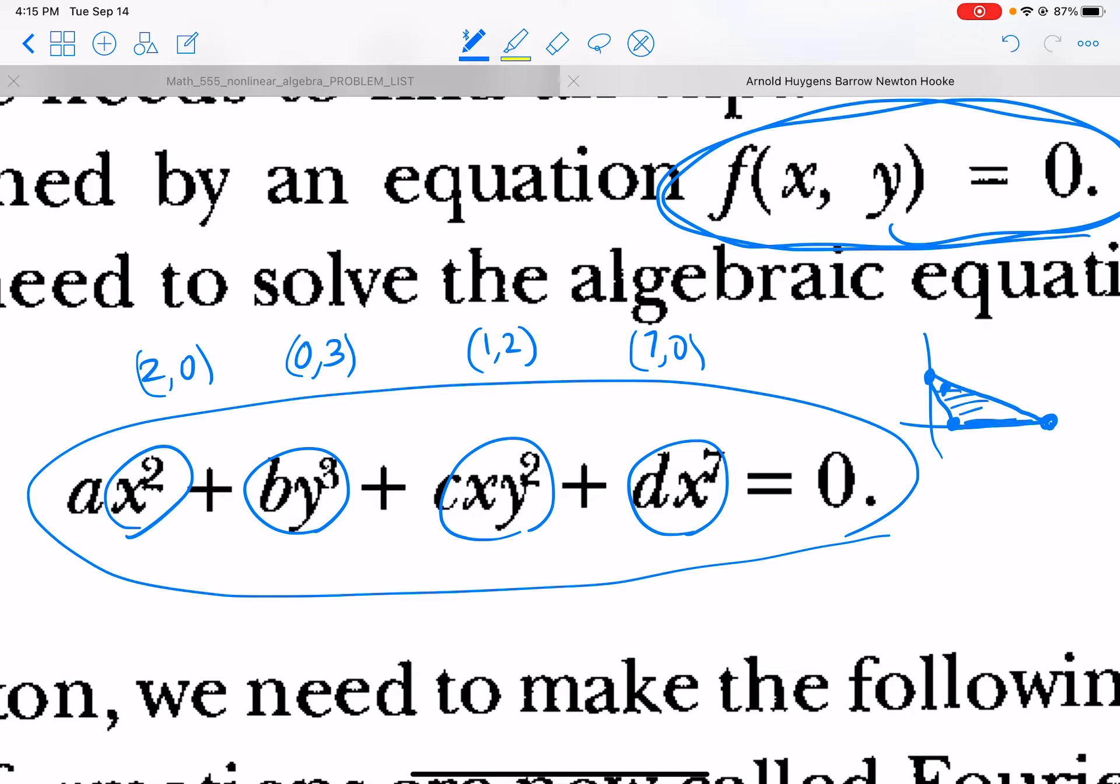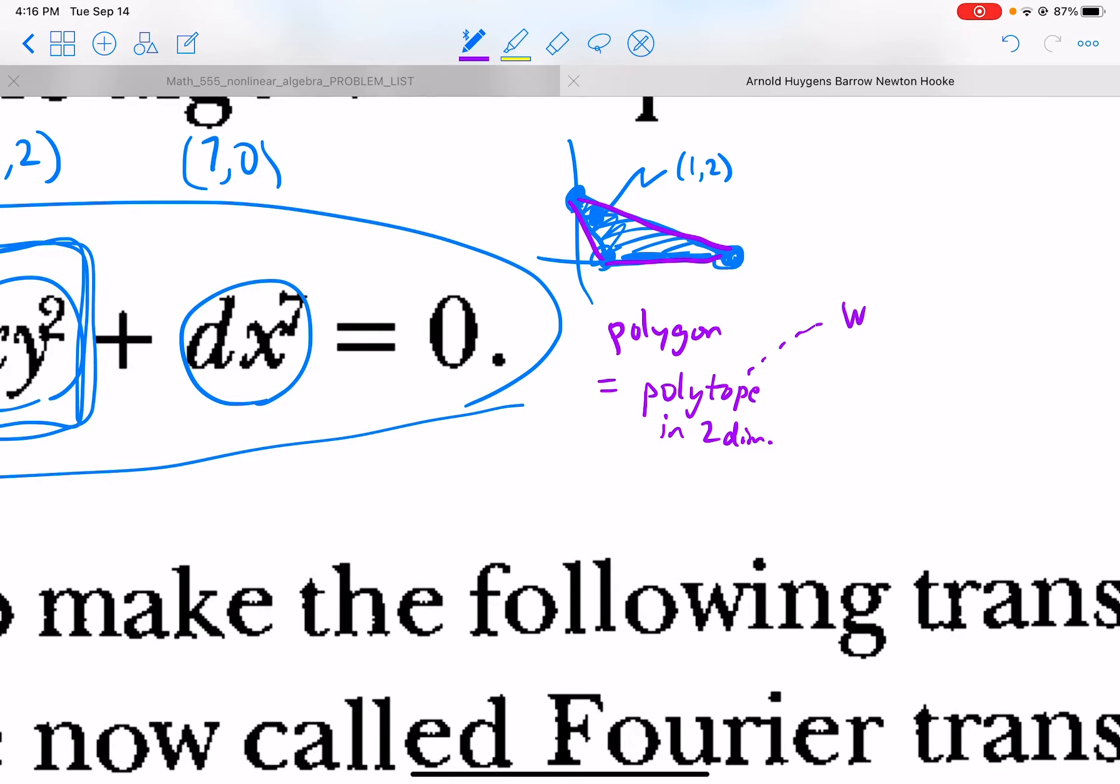Okay, so then here's the Newton polygon. Notice that this point, this was the point one comma two that I very badly drew, is inside the convex hull of the other three. So actually what will happen is that this term of the series, or sorry, of the polynomial, namely this one right here, is going to be sort of less important than the others. It's an amazing fact that sort of only the sides of this polygon matter. Polygon is the word for polytope in two dimensions, whereas polytope can be in any dimension. And polytope, you can find a very nice Wikipedia article.